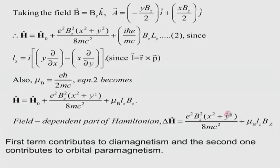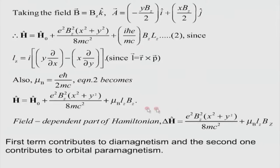Before I proceed, I will make this statement: the first term — essentially the x² + y² term — is the one which gives rise to the diamagnetism of the atom. This is the diamagnetism of the atom, not yet the solid. The second term gives rise to the usual paramagnetism that we talk about. That is why I told you this diamagnetic or paramagnetic response of an atom in a magnetic field is very fundamental and cannot be expressed purely in a classical language. These two terms give rise to two different kinds of magnetic responses: diamagnetism and paramagnetism.